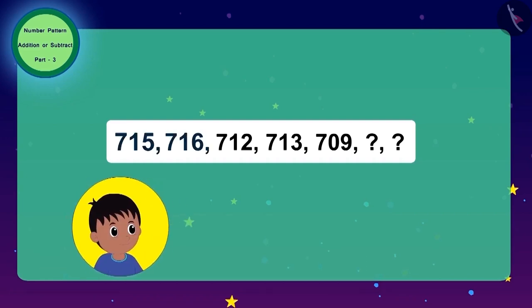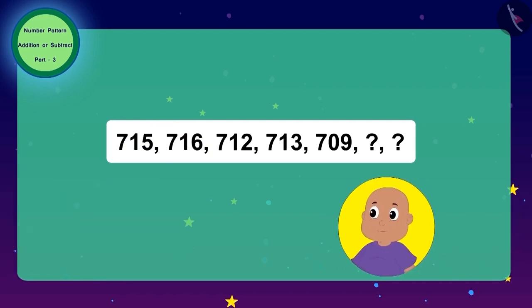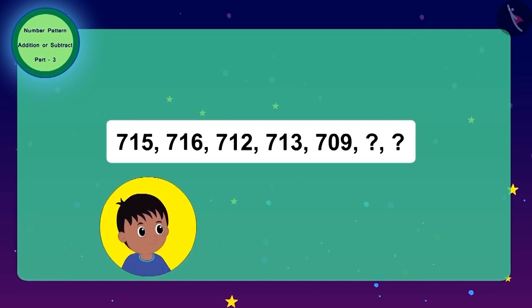Raju saw the first two numbers of the code and he felt that in this pattern of the code, one is added to get the next number. But Bablu looked at the second and third number of the pattern and he felt that we can get the next number by subtracting four from previous number. What do you think? Whose answer is correct? Raju's or Bablu's?